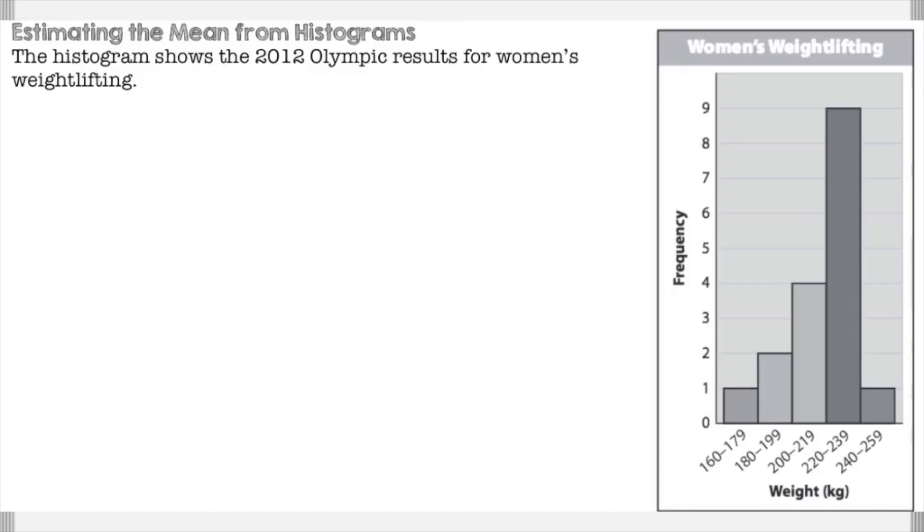For this one, we have to estimate the mean from the histogram. The histogram shows the 2012 Olympic results for women's weightlifting. There's ranges between each one, 160 to 179, 180 to 199, and so on. You're going to find the midpoint and multiply by the frequency.